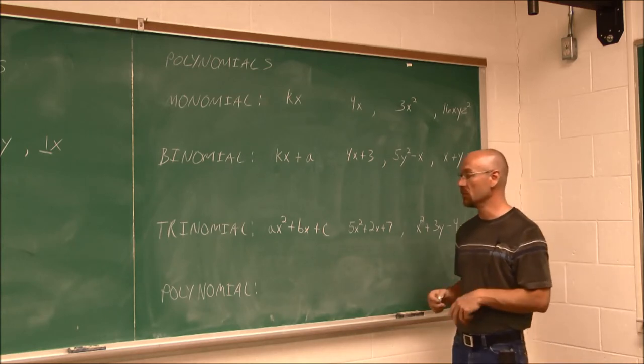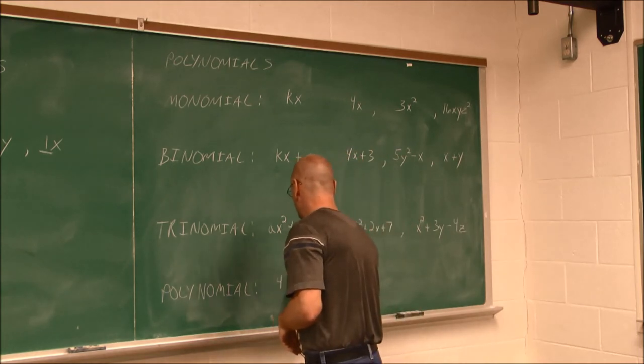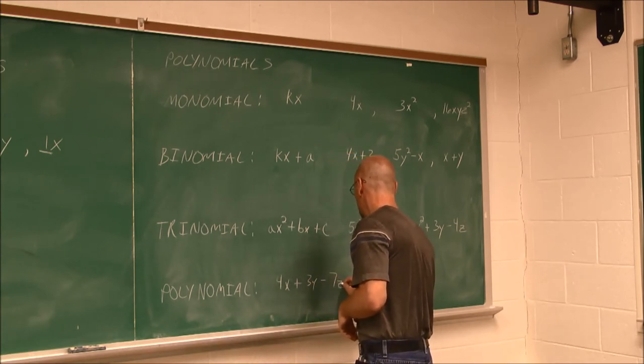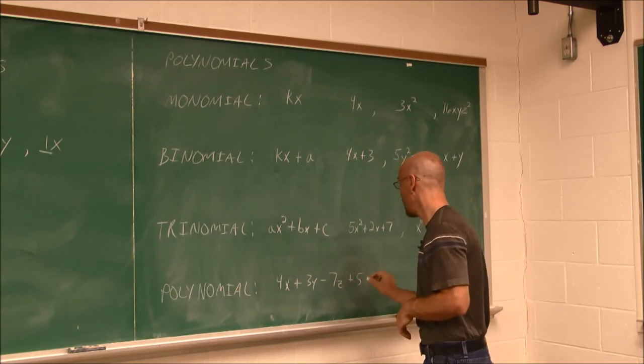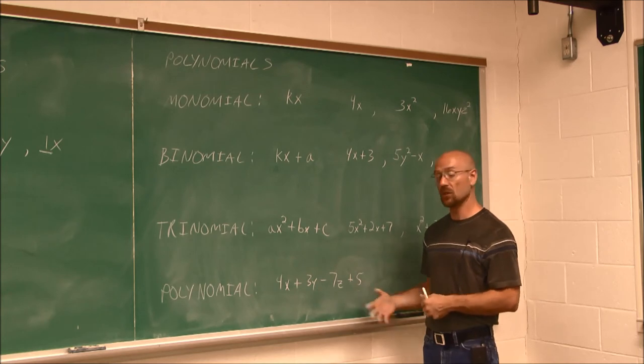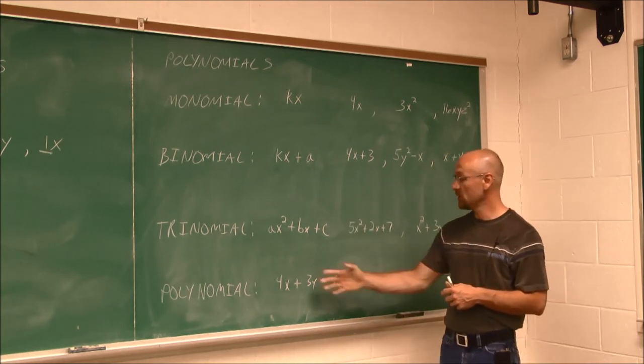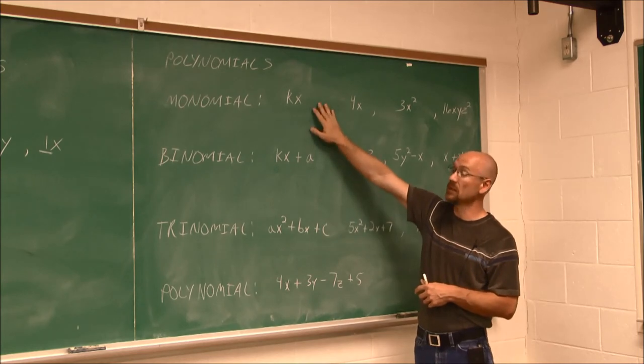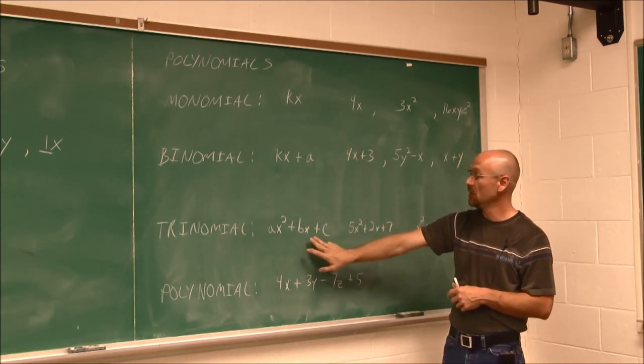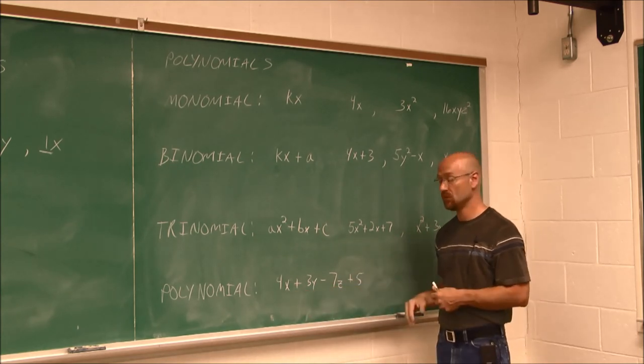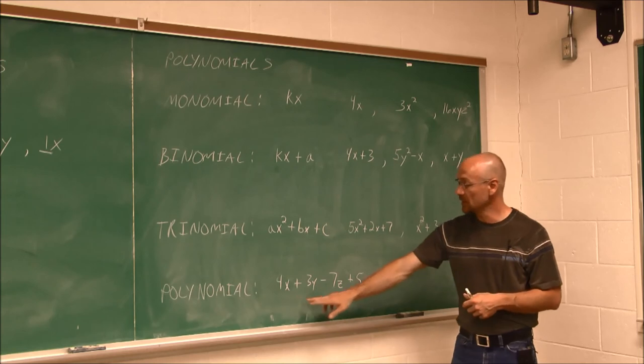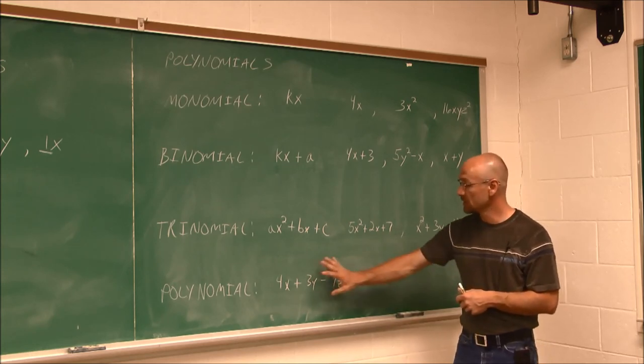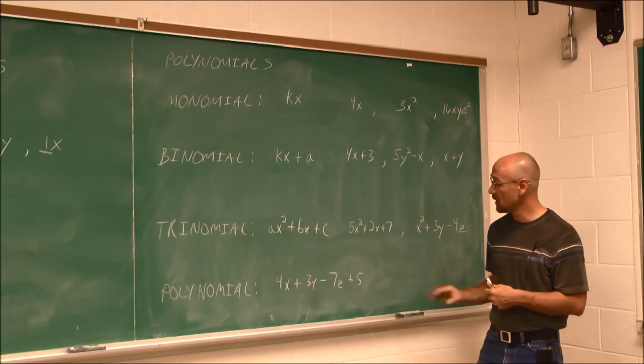So let's look at an example of a polynomial. Maybe we have something 4x plus 3y minus 7z plus 5. We could continue on. This is a polynomial. We don't have a general term for more than 3, so we just call it a polynomial. They're actually all defined as polynomials, but for these specific three, we have specific names. A single term, monomial. Two terms, binomial. Three terms, trinomial. And a polynomial is what we generally use for more than 3. And we can see 4 is our numerical coefficient. 3 is our numerical coefficient. 7 is a numerical coefficient, and so is 5. So we can see that we can identify that using what we had talked about, defining coefficients.